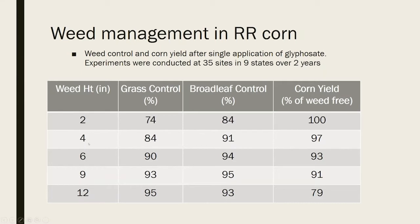Now here's the four inch. Grass control was better at the end of the year — went from 74 to 84. In broadleaves, we went from 84 up to 91. And we mostly protected the yield, but we started to see just a little bit of a decline in our yield by waiting till four-inch weeds.